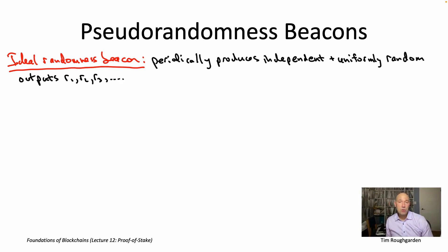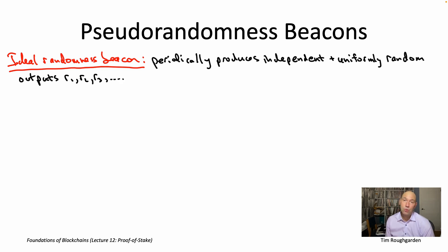Proof-of-stake blockchain protocols, meanwhile, have no obvious source of untrusted external randomness. The way proof-of-stake protocols work is they generate randomness — really pseudo-randomness — from the only stuff they know about: really just from their own hermetically sealed environment. That's a fundamental challenge of proof-of-stake random sampling, which we didn't have to worry about back when we were doing proof of work. In this video, I'm going to show you an approach to approximating an ideal randomness beacon with some kind of pseudo-randomness beacon, which is actually pretty common practice in today's proof-of-stake blockchain protocols.